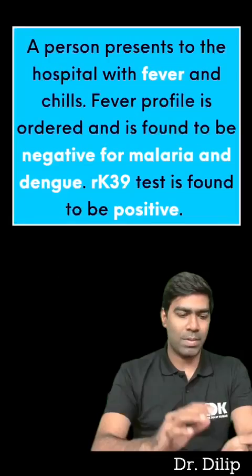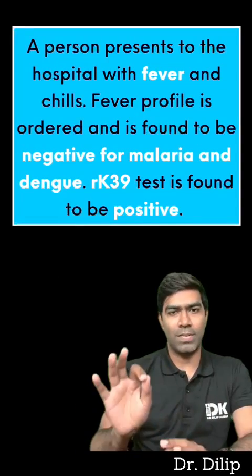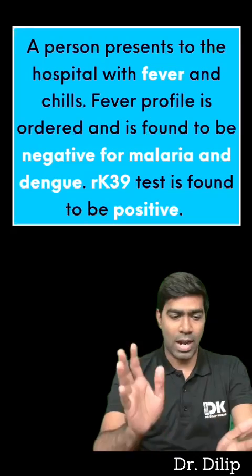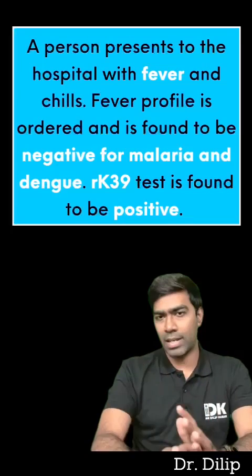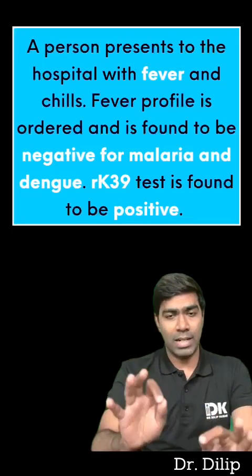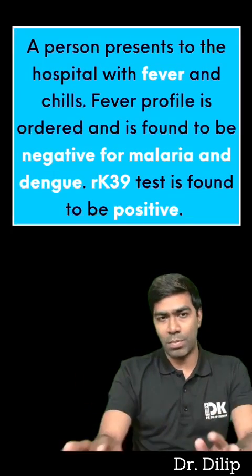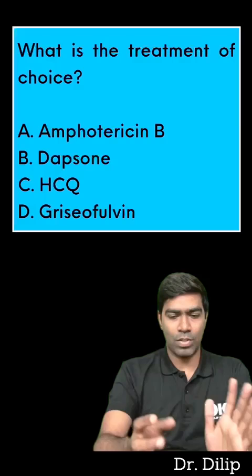A patient presenting to the hospital with fever and chills. Fever profile is ordered and is found to be negative for malaria and dengue. RK-39 antigen test alone is found to be positive. What is the treatment of choice?